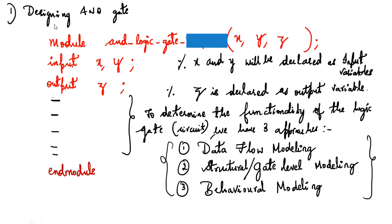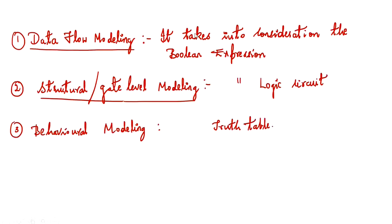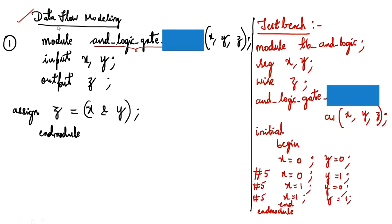Our program starts with the module. Inside the module we write the functionality of the logic gate. There are three parts: data flow modeling, structural gate level modeling, and behavioral modeling. In data flow modeling we write the Boolean expression; in structural gate level modeling we write the logic circuit; and in behavioral modeling we write the truth table.